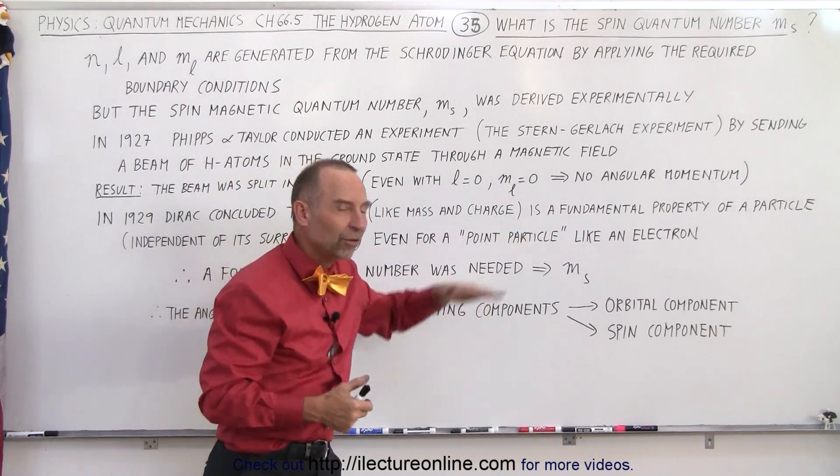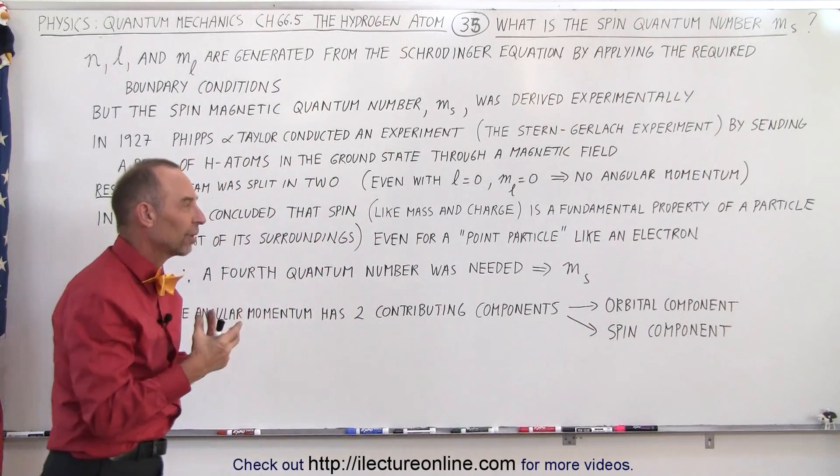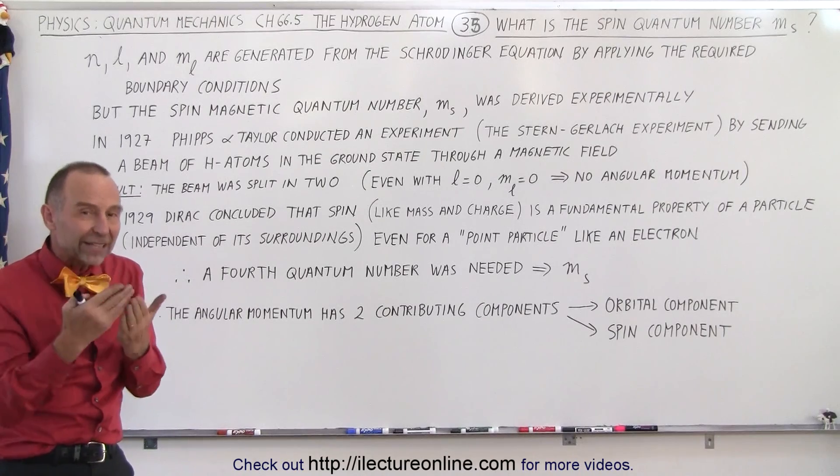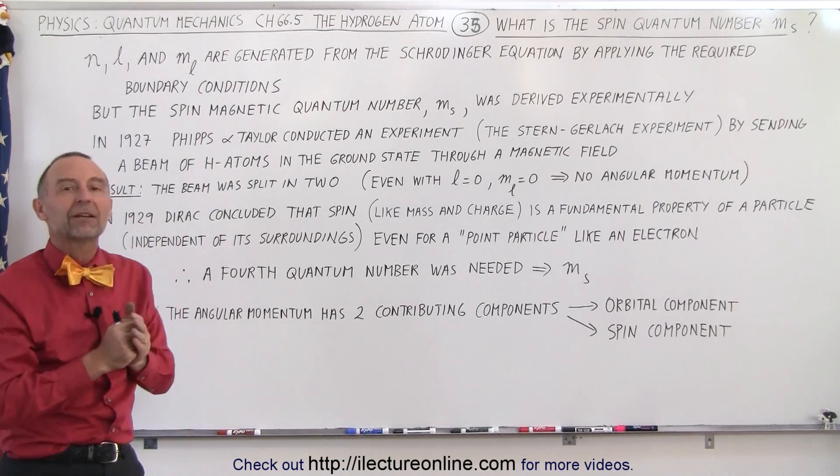still, there must be something about that electron that has another property called the spin property, which is therefore affected when it's sent through a magnetic field.